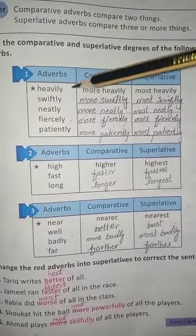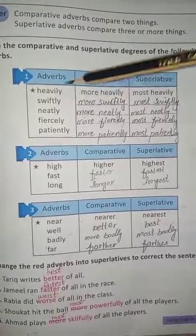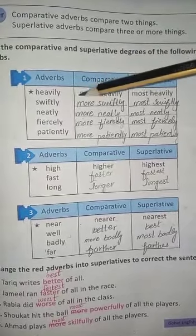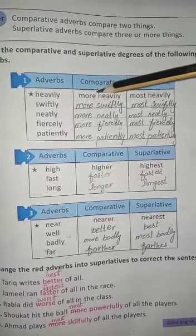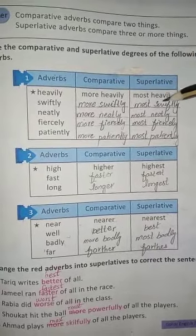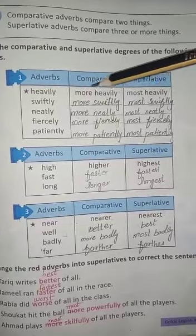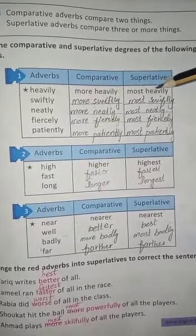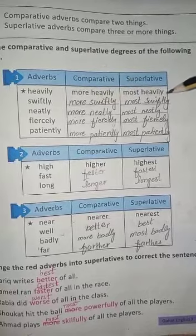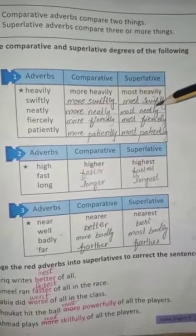When the adverb ends in -LY, we write 'more' for the comparative and 'most' for the superlative. For example: swiftly, more swiftly, most swiftly. Similarly: neatly, more neatly, most neatly.